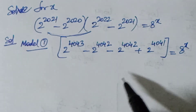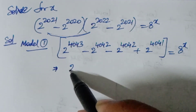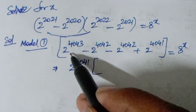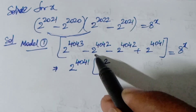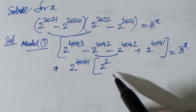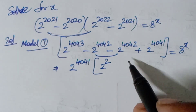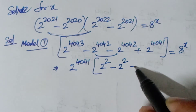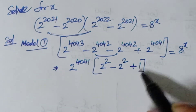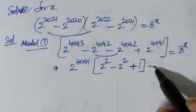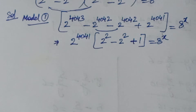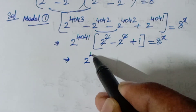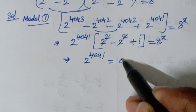Now, taking 2 to the power of 4041 as a common factor from both terms — you get 2 squared, so the like terms give you 2 to the power of 4043. You will also get 2 squared minus 2 plus 1, which simplifies. So 2 to the power of 4041 times 1 equals 8 to the power of x. The twos cancel, leaving 2 to the power of 4041 equals 8 to the power of x.